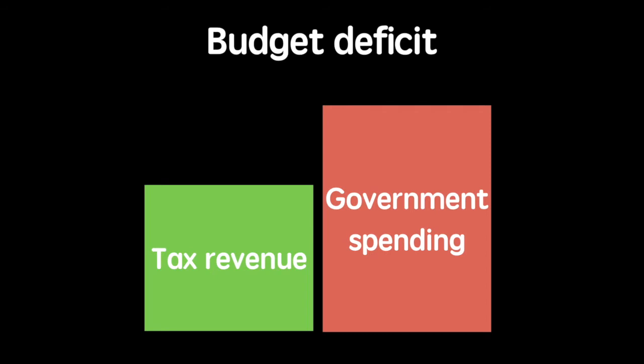A structural budget deficit occurs when the government is consistently spending more than they have collected in tax revenues. The state of the economy is irrelevant — if a country is regularly spending more than it collects in tax, it can be described as fiscally irresponsible.